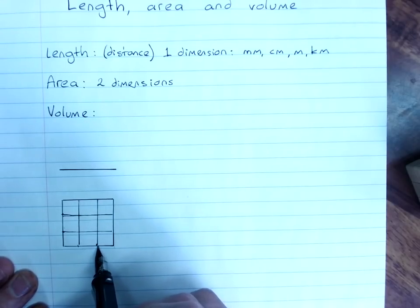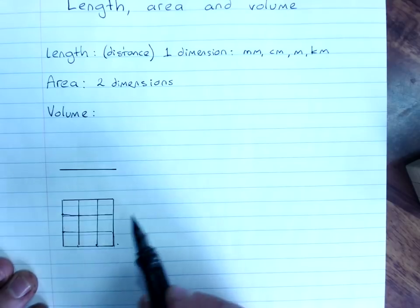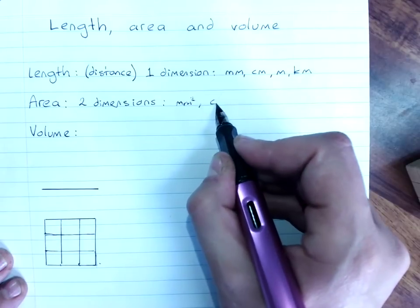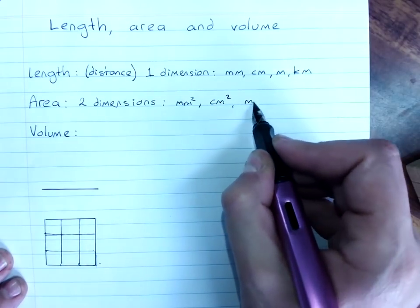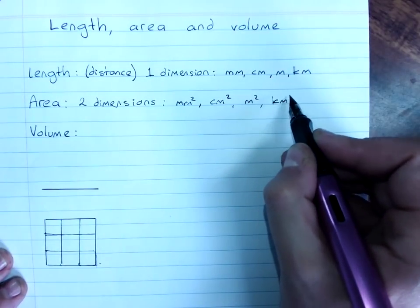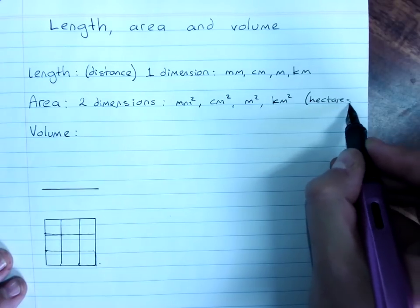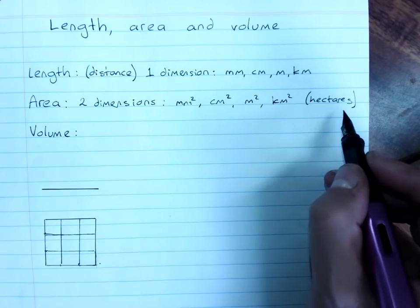And the squares are one centimeter by one centimeter. So, my units are millimeters squared, centimeters squared, meters squared, or kilometers squared. And we also have hectares, which are a special measurement that just works for area.